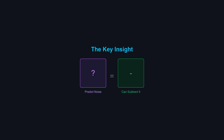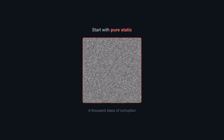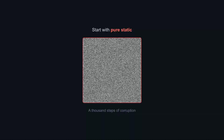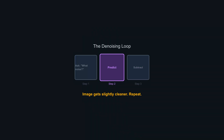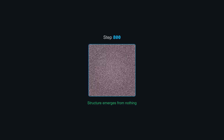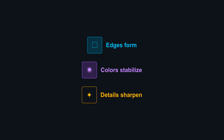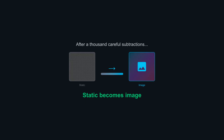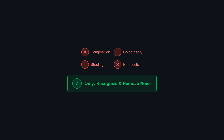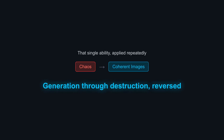The key insight: if you can predict the noise in an image, you can subtract it. Start with pure static — a thousand steps of corruption. Ask the model, what noise do you see here? It makes a prediction. Subtract that. The image gets slightly cleaner. Repeat a thousand times. Each step, the model removes what it thinks is noise, and structure emerges from nothing. Edges form. Colors stabilize. Details sharpen. After a thousand careful subtractions, static becomes image. The network never studied composition or color theory — no lessons in shading or perspective. Its only skill is recognizing noise and removing it. That single ability, applied repeatedly, transforms chaos into coherent images. Generation through destruction, reversed.